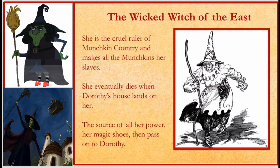The next character is the Wicked Witch of the East. She doesn't have a large role in the story but she is a very important character. She is the cruel ruler of Munchkin country and makes all the Munchkins her slaves. She eventually dies when Dorothy's house lands on her. The source of all her power — her magic shoes — then passes on to Dorothy, along with her powers.